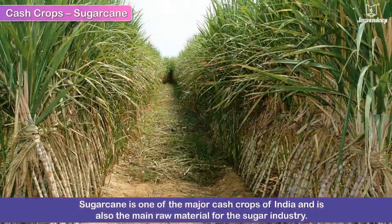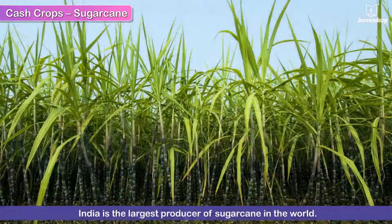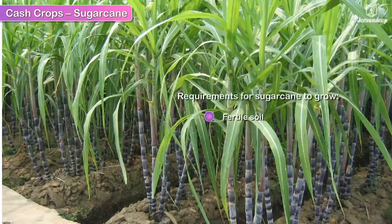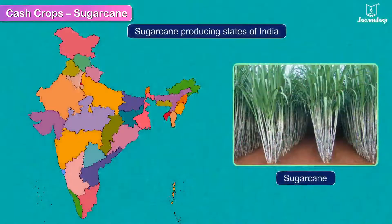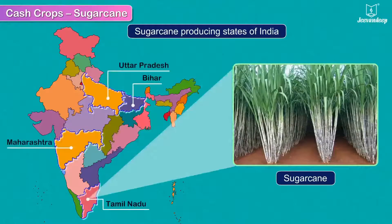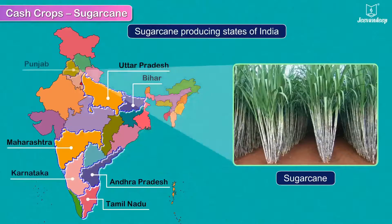Sugarcane is one of the major cash crops of India and is also the main raw material for the sugar industry. India is the largest producer of sugarcane in the world. Sugarcane cultivation needs fertile soil and a hot and humid climate along with abundant rainfall. Sugarcane is extensively grown in Uttar Pradesh, Bihar, Maharashtra, Tamil Nadu, Andhra Pradesh, Karnataka, and Punjab.